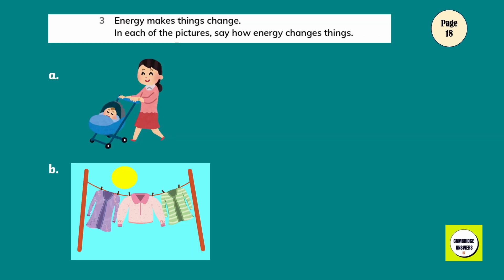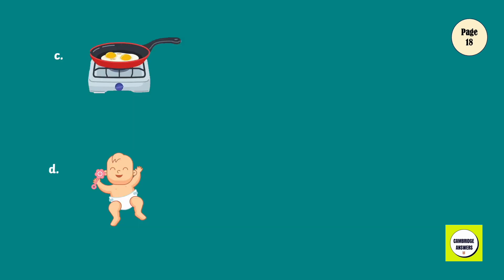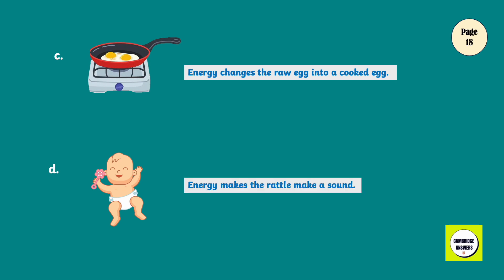Energy makes things change. In each of the pictures, say how the energy changes things. Energy makes the stroller move. Energy makes wet washing dry. Energy changes the raw egg into a cooked egg. Energy makes the rattle make a sound.